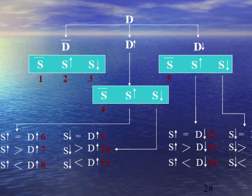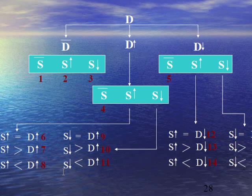For example, case number 1 shows that there is no change in demand and no change in supply, giving us the initial equilibrium point. Case 2 explains when there is no change in demand and supply rises. Likewise, we have 17 cases that we will discuss in this lesson. Let us start with case number 1.